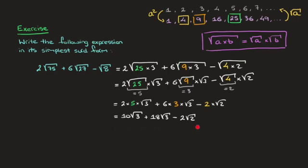All that's left to do now is gather any like terms. Looking at the first two terms, we have 10 times the square root of 3 and 18 times the square root of 3. Since we're dealing with the same surd in each case, we can add these two together, giving us 28 times the square root of 3 — that's 28 root 3.